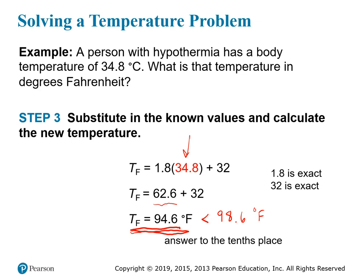The 1.8 in the formula comes from the ratio 180 divided by 100, and both of those are exact numbers, so 1.8 is exact. Similarly, the 32 comes from the definition of the Fahrenheit scale and is also exact. This means neither number affects our significant figures — so if the temperature is initially given to three significant figures, the answer should also have three significant figures.